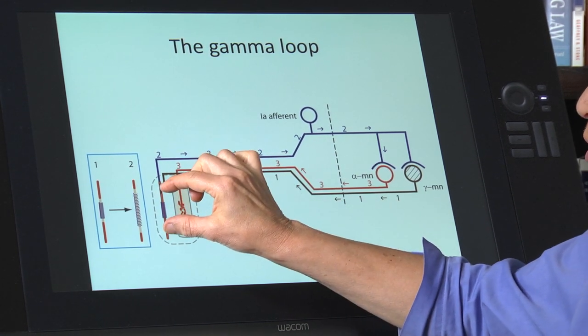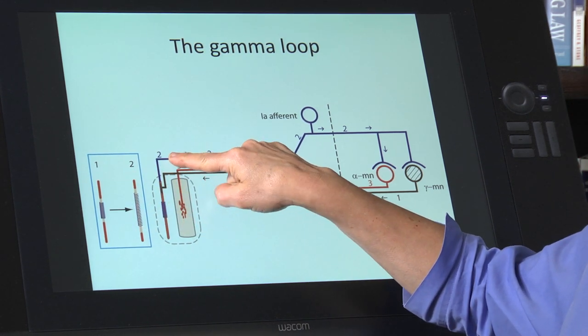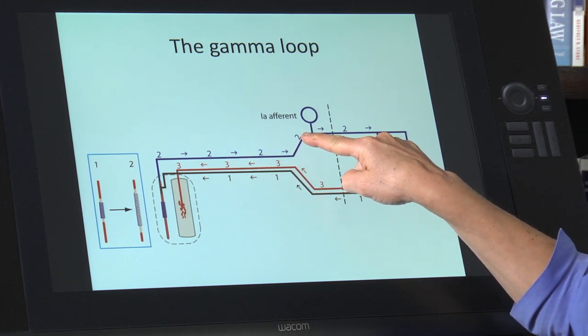Which in turn stretches the equatorial region, resulting in activation of the 1A afferent. The 1A afferent is activated, action potentials come in.